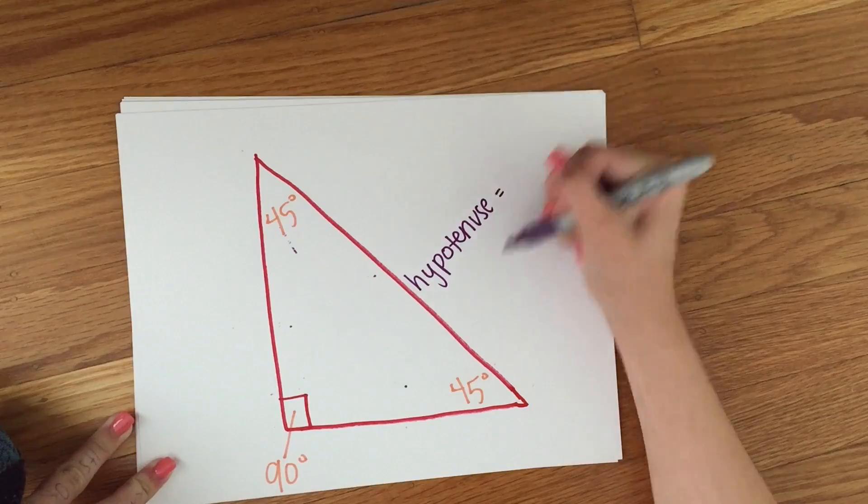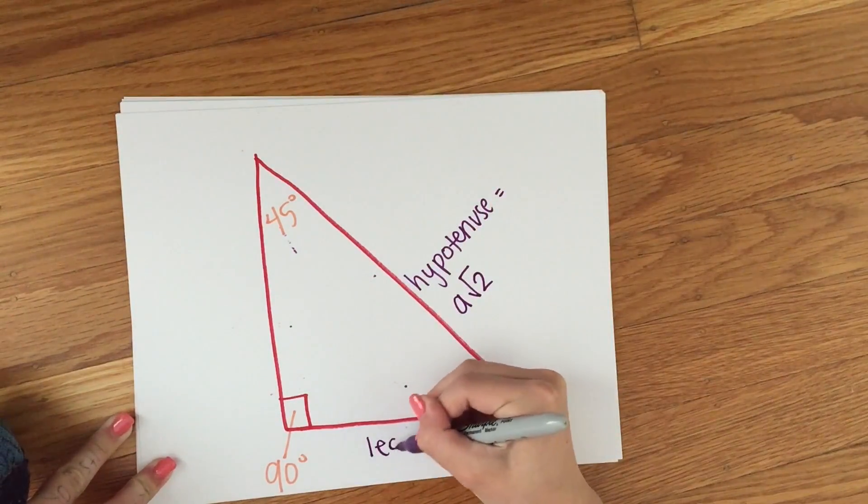The hypotenuse equals a root 2, and the legs equal a.